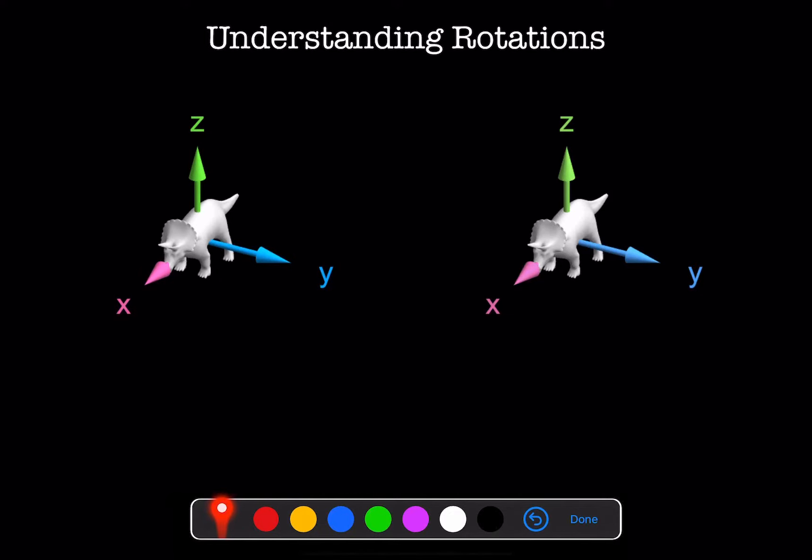On the left, I'm going to rotate my triceratops by 90 degrees first about the x-axis, and then by 90 degrees about the y-axis. And this is the final orientation. On the right, I'm going to rotate about the y-axis first, and then about the x-axis. This is the final orientation of our triceratops. The two dinosaurs are definitely not oriented in the same way.